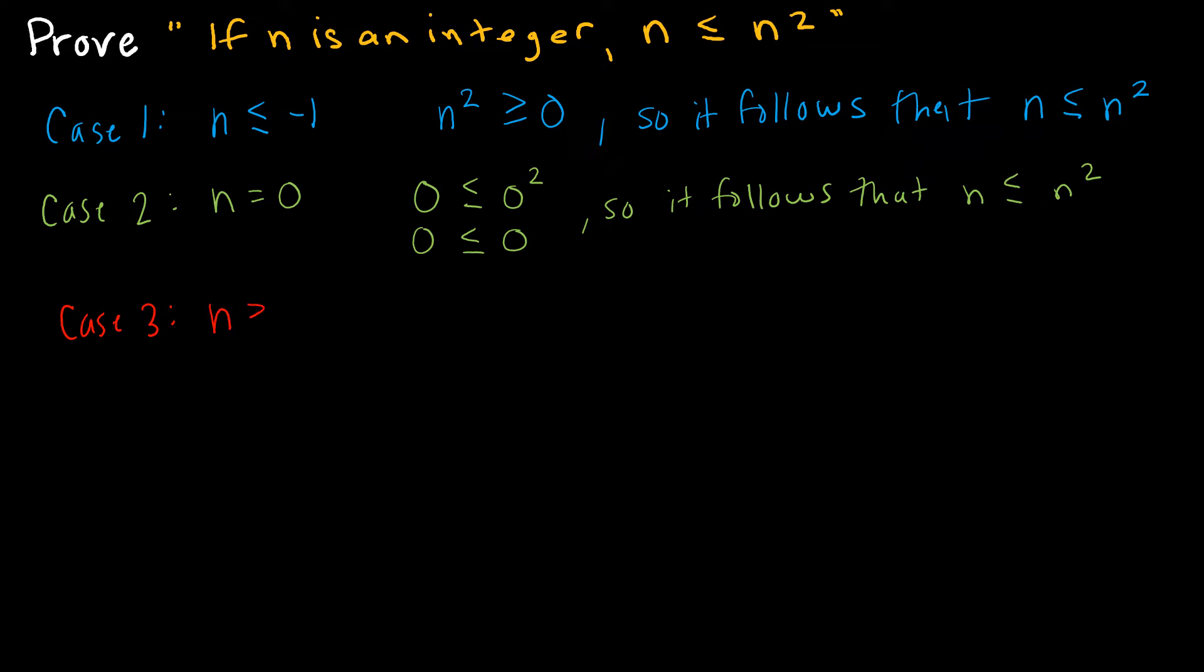Then we have case three. And case three was of course dealing with the positive values. So n is greater than or equal to 1. So if I say I have n is greater than or equal to 1. Let's say I take this side times n and this side times n. I get n squared is greater than or equal to n just by multiplying each side.